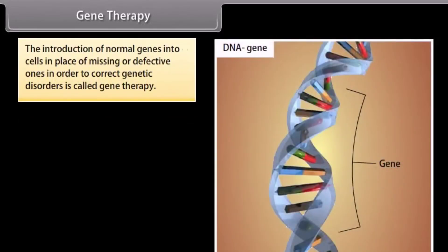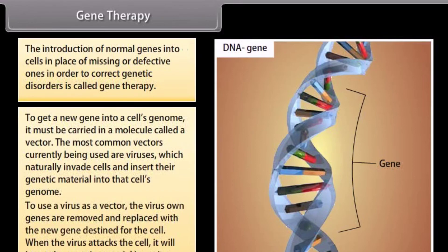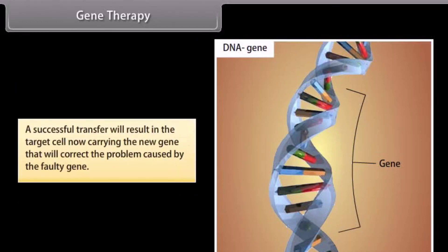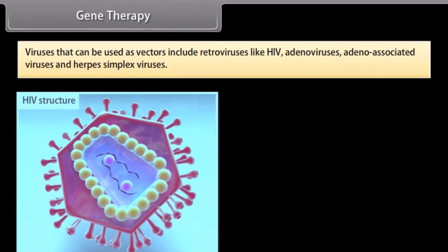Gene therapy: the introduction of normal genes into cells in place of missing or defective ones in order to correct genetic disorders is called gene therapy. To get a new gene into a cell's genome, it must be carried in a molecule called a vector. The most common vectors currently used are viruses, which naturally invade cells and insert their genetic material into the cell's genome. To use a virus as a vector, the virus's own genes are removed and replaced with the new gene. When the virus attacks the cell, a successful transfer will result in the target cell carrying the new gene. Viruses that can be used as vectors include retroviruses like HIV.